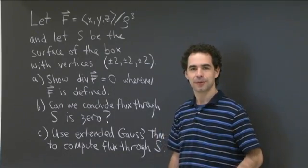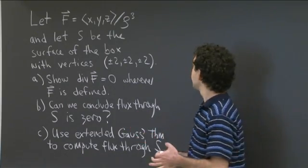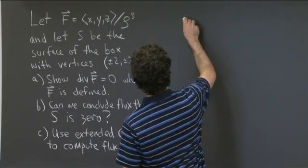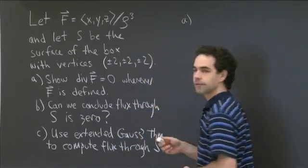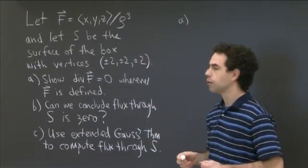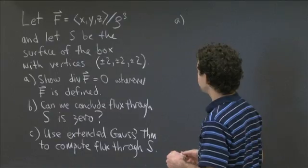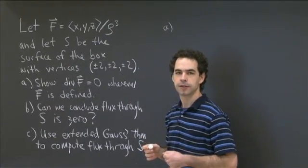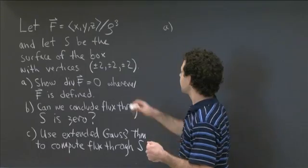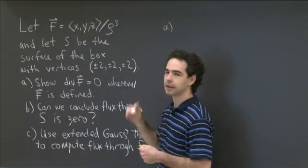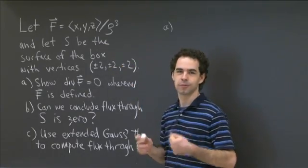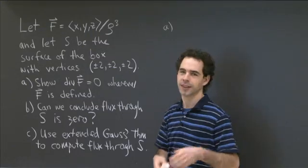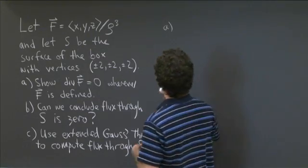Hopefully you had some luck with this problem, let's get started. Part a asks you to compute the divergence of F. In order to compute that, we're going to need to take the partial derivatives of the components of F. And in order to do that, at some point I'm going to need to take a partial derivative of rho. So let me first compute the partial derivatives of rho, and that'll save me a tiny bit of work later.